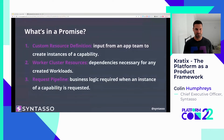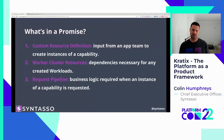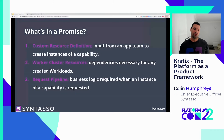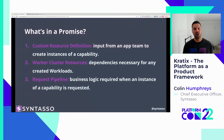Next up in the promise, we have worker cluster resources — any dependencies necessary whenever we create an instance of this capability. For Jenkins, we need to ensure the Jenkins operator is already installed on our worker clusters before scheduling a Jenkins instance onto them. This could include daemon sets, metrics, monitoring, and operators — an entire collection of resources, whatever the dependencies are for the promise instance. This is where you put them in the worker cluster resources.